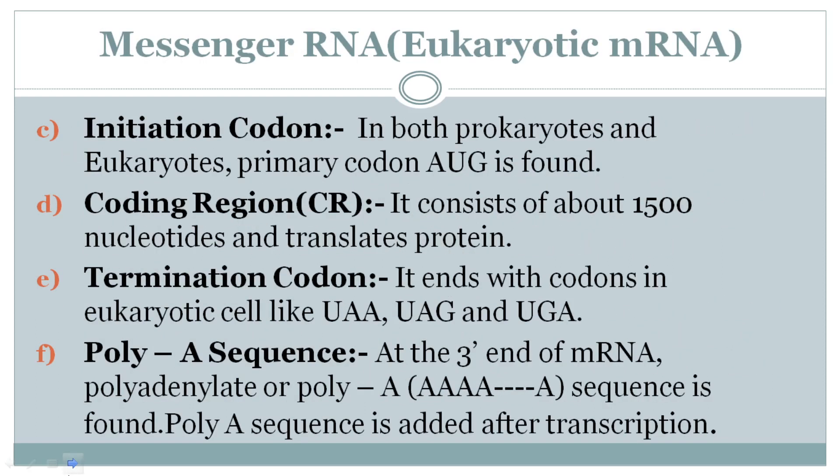The initiation codon is AUG — adenine, uracil, guanine — which is also called the start codon. The coding region contains approximately 1500 nucleotides used to translate into protein. The termination codons, where translation stops, are UAA, UAG, and UGA — these are very important in competitive exams. Finally, there is a poly-A sequence at the 3' end, also called the adenylated sequence.